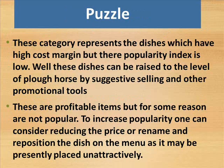Puzzle: This category represents the dishes which have high contribution margin but their popularity index is low. These dishes can be raised to the level of plow horse by suggestive selling and other promotional tools. These are profitable items but for some reason are not popular. To increase popularity, one can consider reducing the price or rename and reposition the dish on the menu as it may be presently placed unattractively.